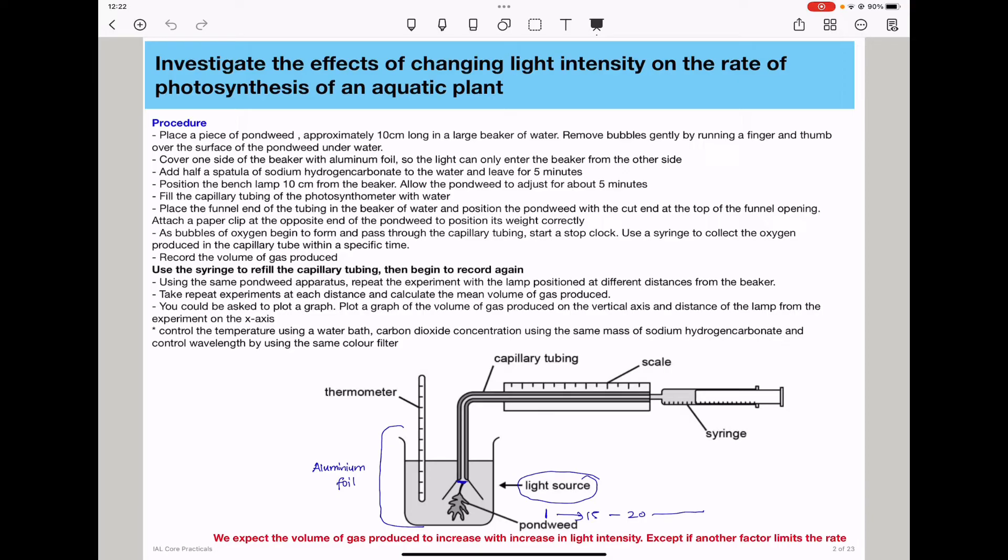So using the same pondweed apparatus, you will need to repeat the experiment with the lamp positioned at different distances from the beaker. Remember, varying the position of the lamp is the same as varying light intensity because if you bring it closer to the experimental setup, it means there is high light intensity and if you move it far away, the light intensity is decreasing. So the higher the light intensity, the higher the rate of oxygen being produced and therefore the higher the rate of reaction. That should be your expected result.